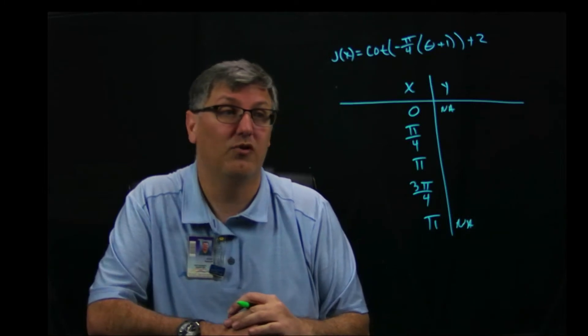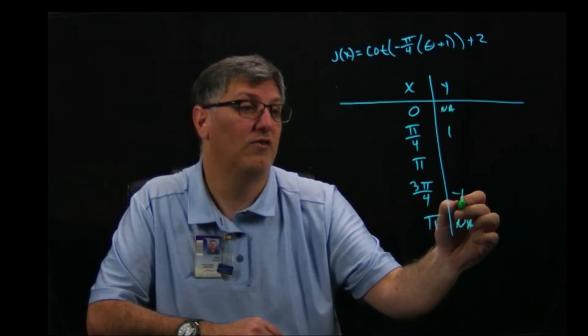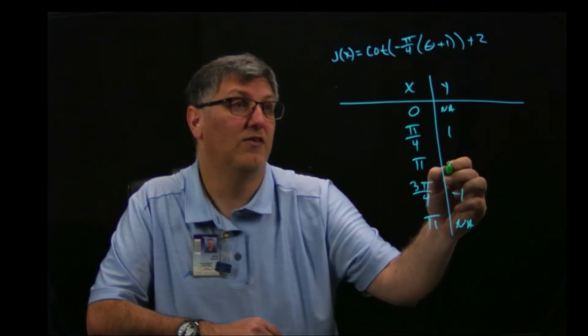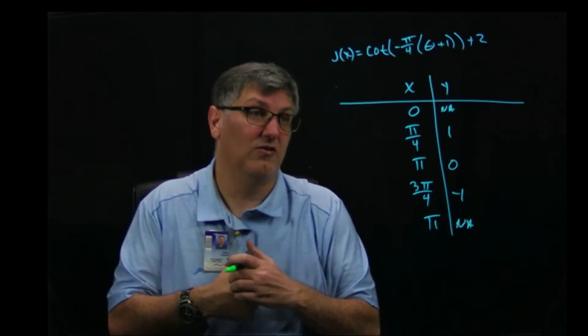Those are going to be my vertical asymptotes. At pi over four, it's one, and at three pi over four, it's negative one, and at pi over two, it is zero. So those are my parent function points.